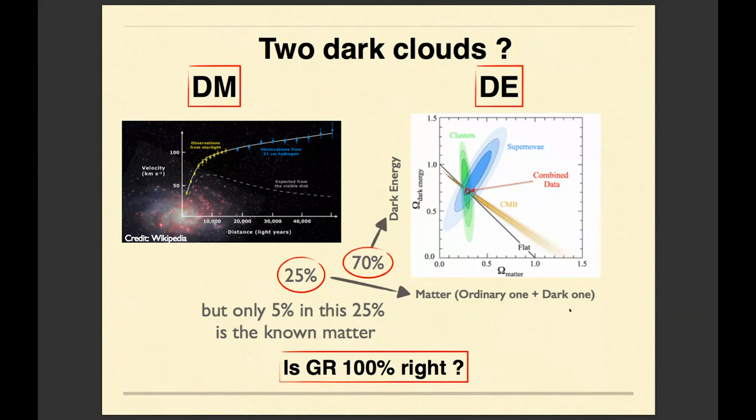We can see that the stars which are far away from the galactic center, which are supposed to move slowly because they are far away, they don't care about what happens in the galactic center. Actually, these stars are moving very fast. They are rotating very fast around the galactic center. They should not rotate that fast.